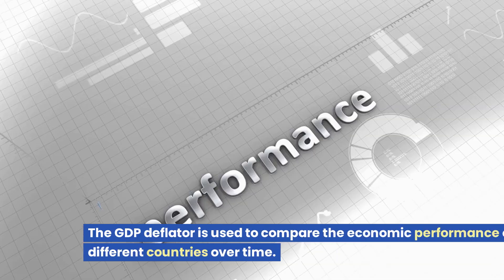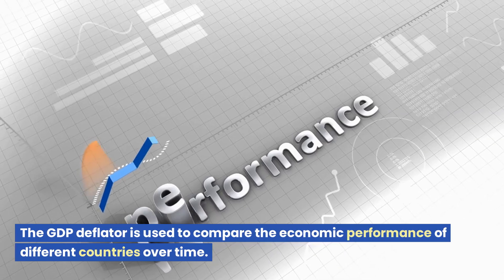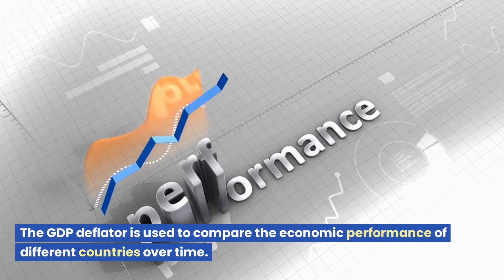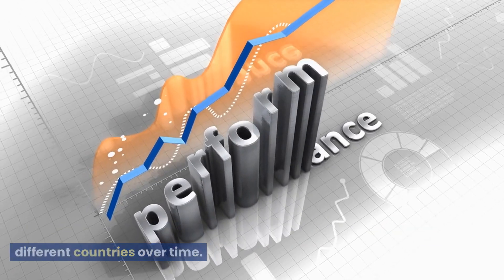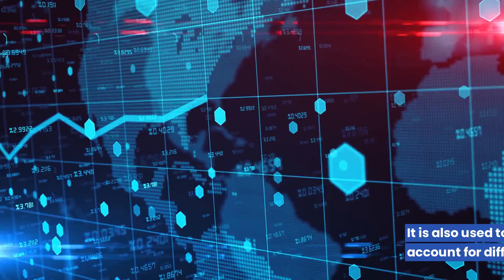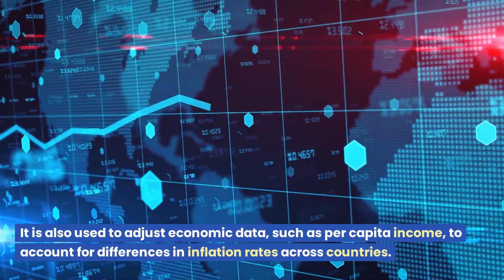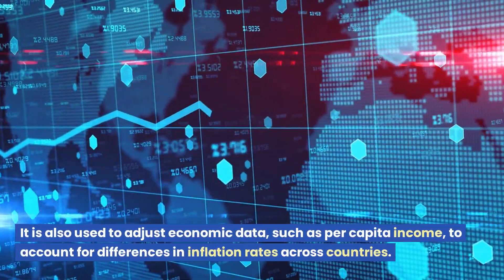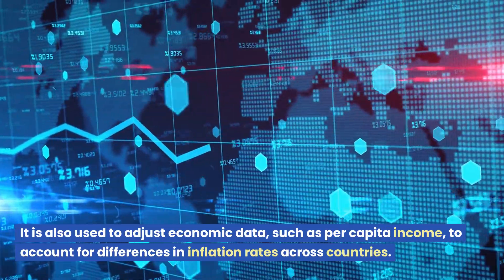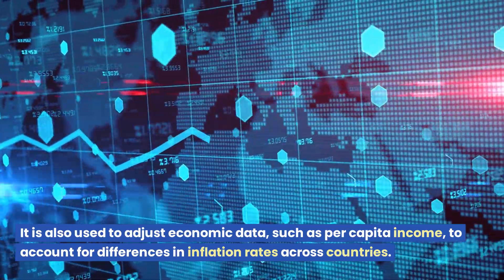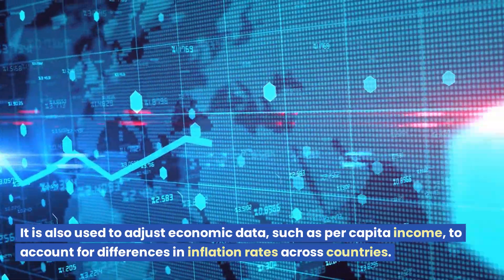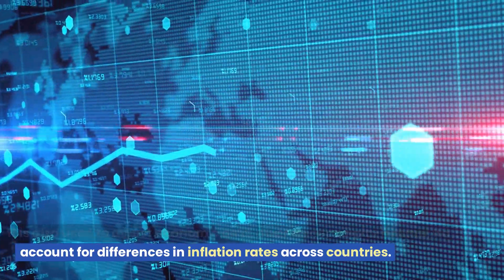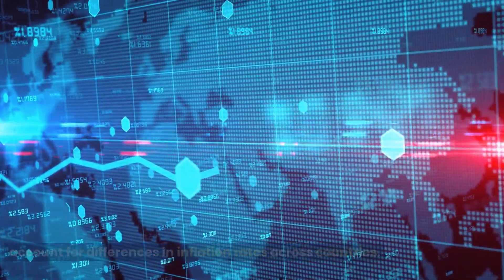The GDP deflator is used to compare the economic performance of different countries over time. It is also used to adjust economic data, such as per capita income, to account for differences in inflation rates across countries.